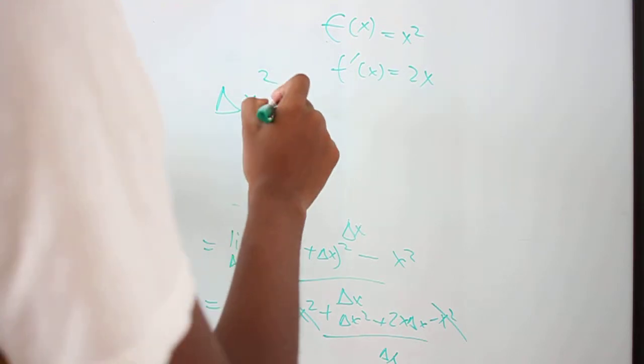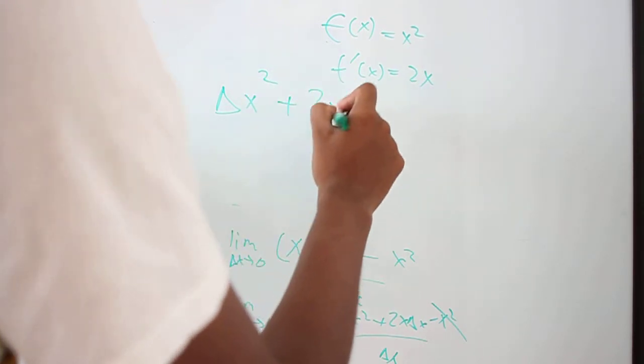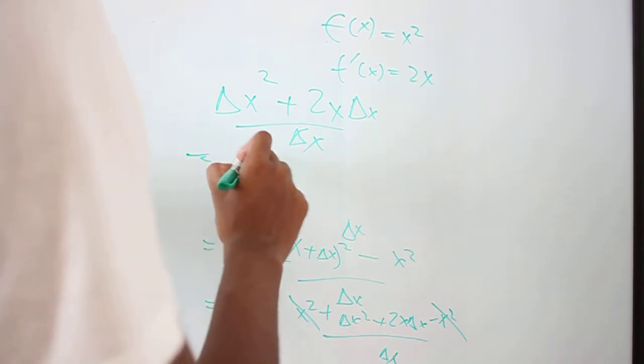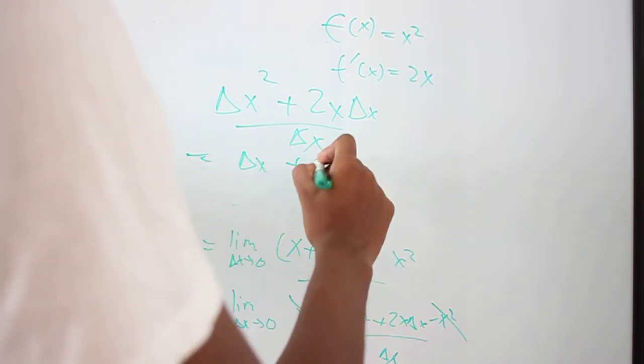So what you have is delta x squared plus 2x delta x over delta x. And this is actually equals to delta x plus 2x.